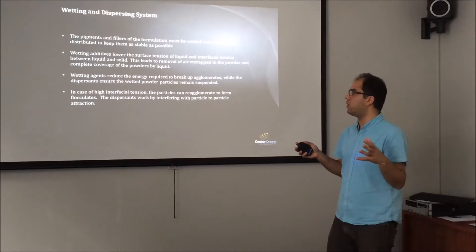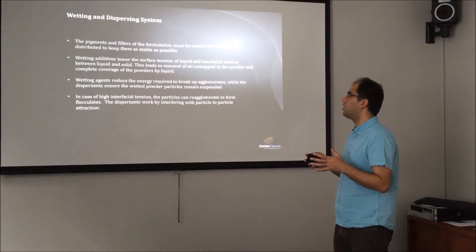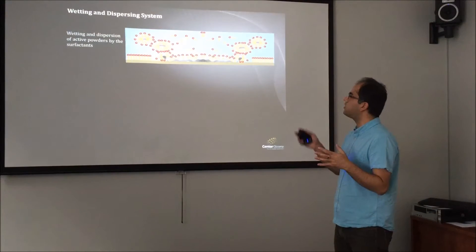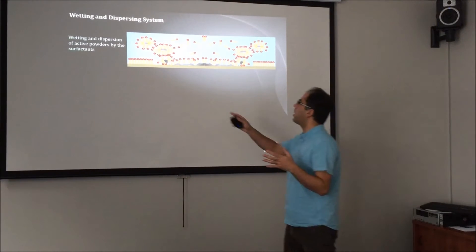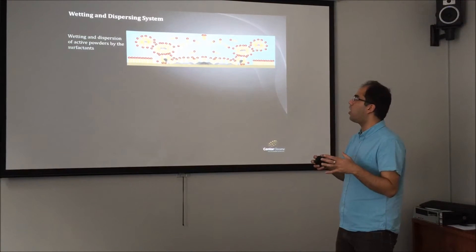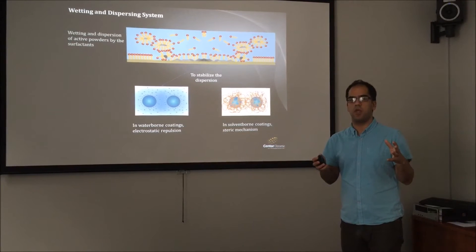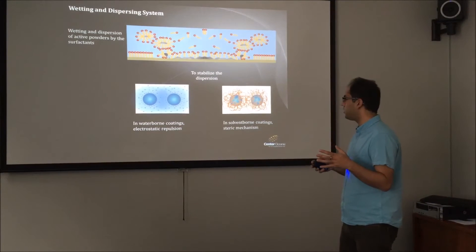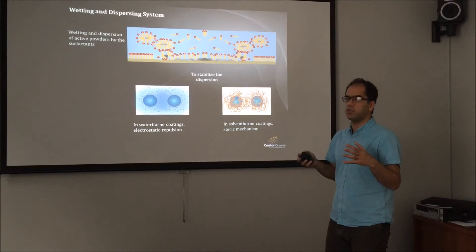After the particles are very well wetted, they need to be dispersed as stably as possible, and the dispersing surfactant helps this to happen. This picture shows how wetting and dispersing surfactants work in the formulation: the powders are initially wetted with the surfactants, then fully dispersed by the dispersing surfactants. Once dispersed, they need to be stabilized in the system for a long time. In waterborne seed coating applications, this is achieved through electrostatic repulsion.